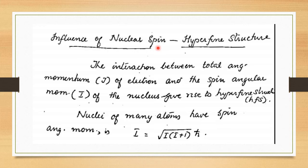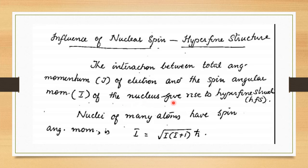Next is the influence of nuclear spin, also called the hyperfine structure (HFS). The hyperfine structure arises from the interaction between the total angular momentum j of the electron and the spin angular momentum i of the nucleus.